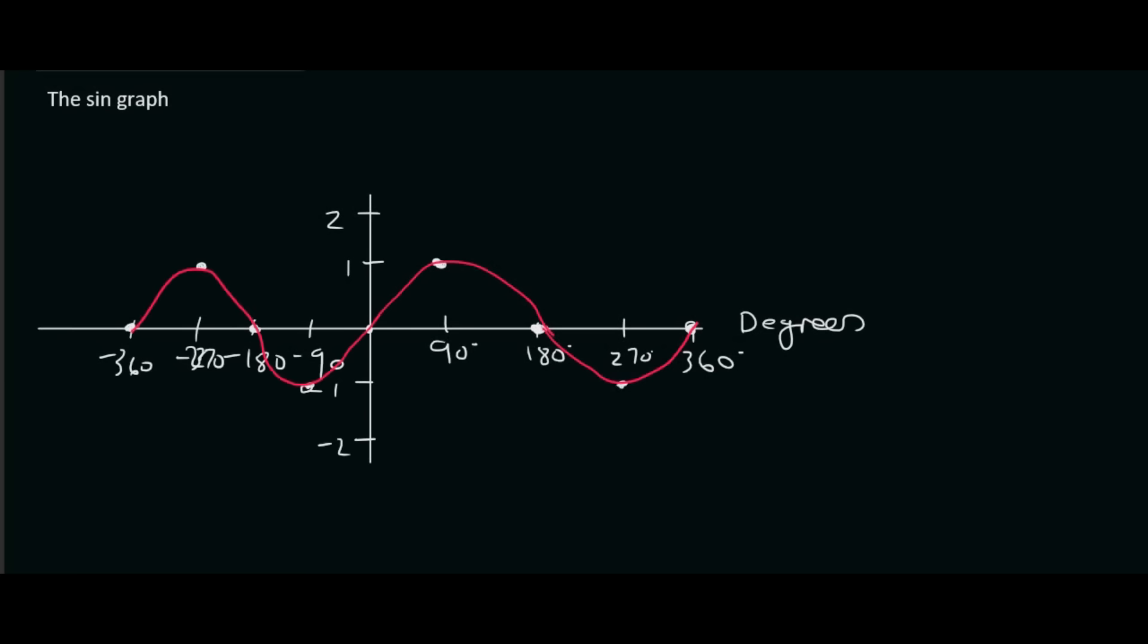So notice how mine has a few untidy parts. It really doesn't matter, guys. That's not really what teachers are looking for. You just want to make sure you can get it as neat as possible. So that is a sine graph. Get very used to it. The main things to realize is that a sine graph at 90 degrees, it has a y value of 1. At 180 degrees, it has a y value of 0. At 270 degrees, it has a y value of minus 1. And at 360 degrees, it has a y value of 0.